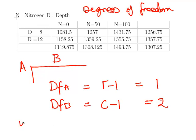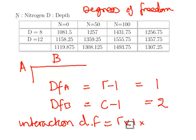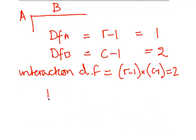The interaction degrees of freedom is R minus one times C minus one, and that's also equal to two. The overall degrees of freedom is—degrees of freedom for total is 24 cases minus one, and that is equal to 23.